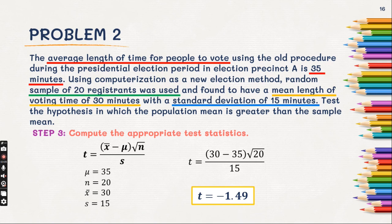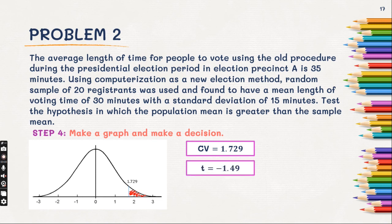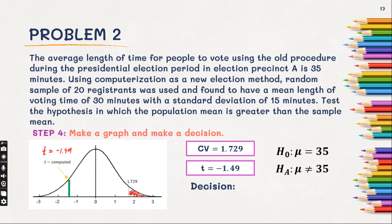Let us graph and make a decision. Our critical value is positive 1.729, so it is on the right side of our curve. Our computed T value is negative 1.49, which is on the left side of our bell curve. Obviously, it is not in the critical region. So our decision is to accept the null hypothesis and reject the alternative hypothesis.